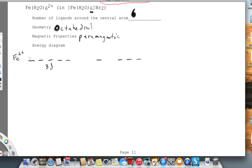You'll notice that on the 3d level, there are 1, 2, 3, 4, 5, 6 electrons. The 4s, we know we've lost both of those. And the 4p. And I also want to show you the 4d.